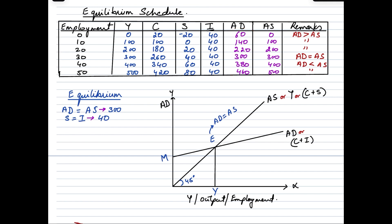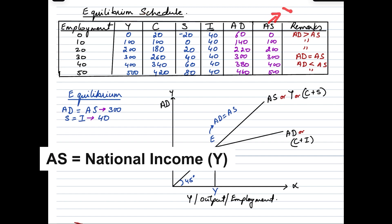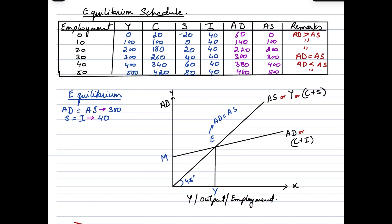Aggregate supply is computed as consumption plus savings — for example, 0 plus 20 minus 20 gives 0 — and derived similarly throughout. Comparing aggregate supply and national income figures, they are the same, confirming that aggregate supply equals national income. Looking at the remarks column: in the first three cases aggregate demand is greater than aggregate supply; the fourth scenario shows AD equal to AS (equilibrium); and thereafter aggregate demand falls short of aggregate supply.